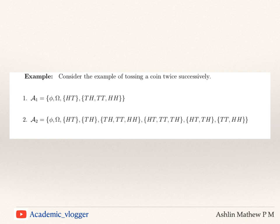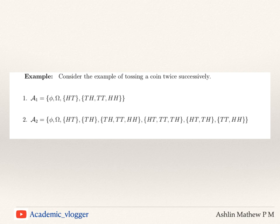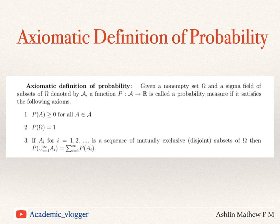Similarly, A2 is also a sigma field because it contains phi, omega, {HT, TH} and its complement, and all unions give omega. A2 is a larger set while A1 is smaller. So to summarize the axiomatic definition of probability: given a non-empty set omega and a sigma field A, a function P from A to R is a probability measure if it satisfies the axiom of non-negativity, the axiom of certainty, and the axiom of additivity.